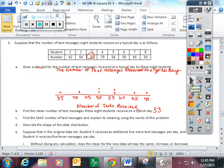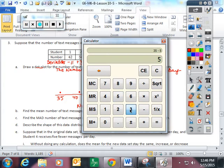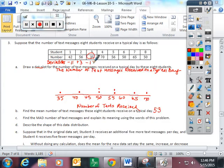So now I'm going to make all of the deviations, and I'm not going to make a huge chart like I used to. I'm just going to try to do this quickly because the better we get at it, the more quickly you should be able to do it. I'm going to figure out how far these are all from the mean. 42 is down 11 from your mean, 56 is up 3, 35 is down 18, 70 is up 17, 56 is up 3, 50 is down 3, 65 is up 12, and 50 is down 3.